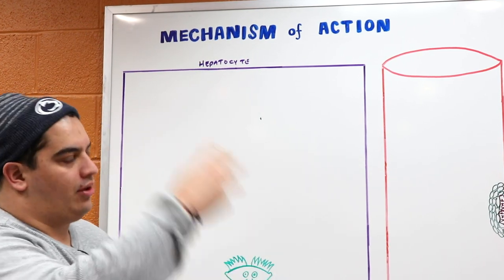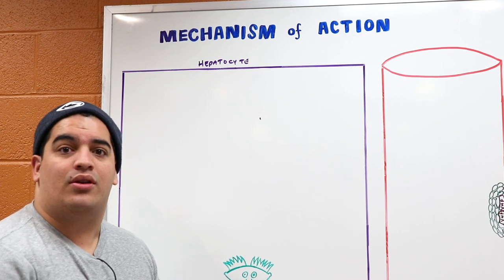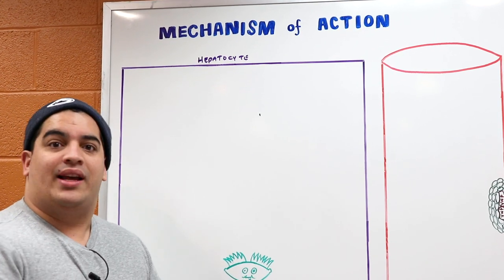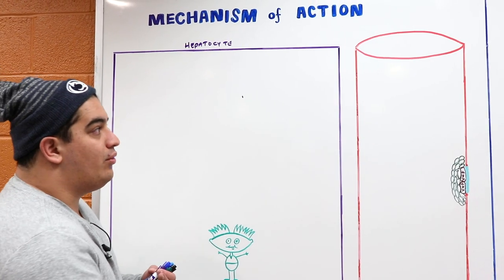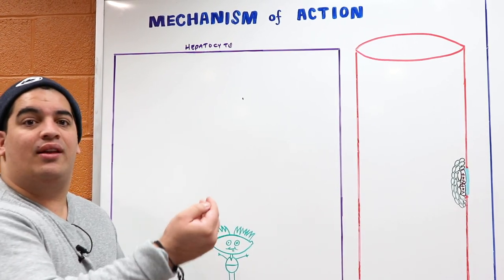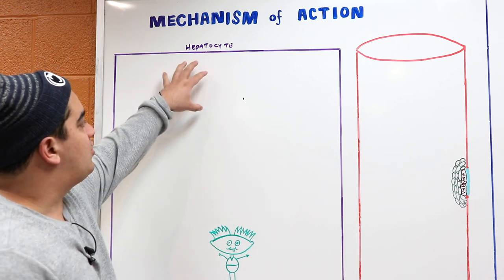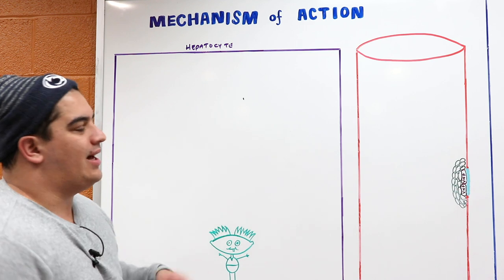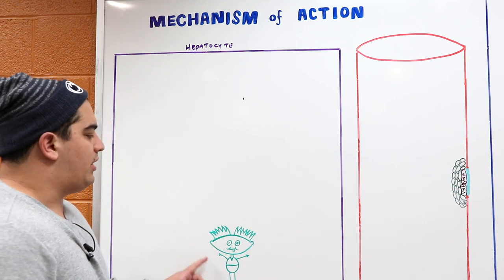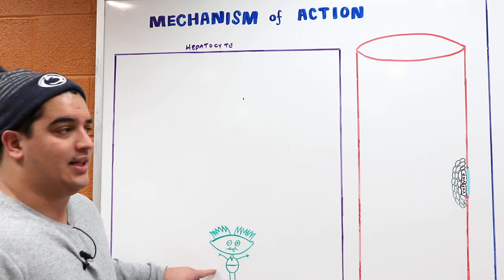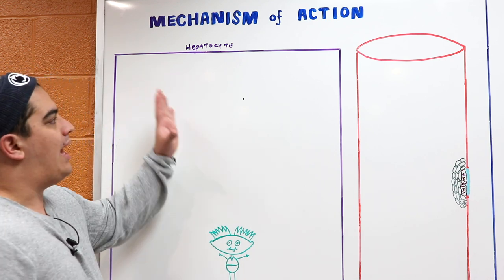You ingest it, it goes through your digestive tract — through your stomach, into the duodenum, part of the small intestine. It gets absorbed across the gut, taken through the portal circulation into the liver, and dropped off at the hepatocyte. Once Warfarin is brought into the hepatocyte, it does get metabolized. We'll talk about the cytochrome P450 oxidase enzyme.